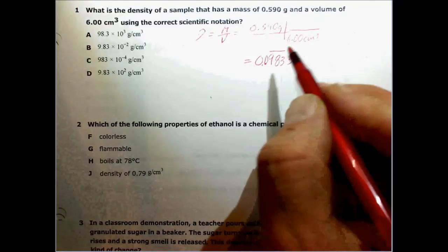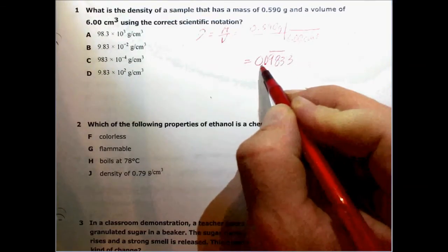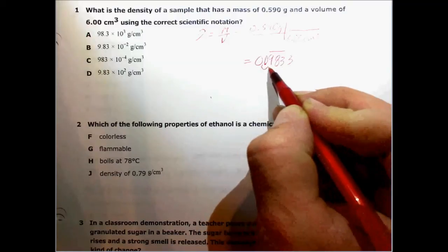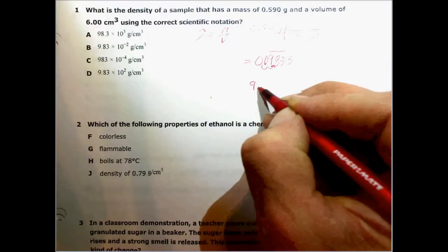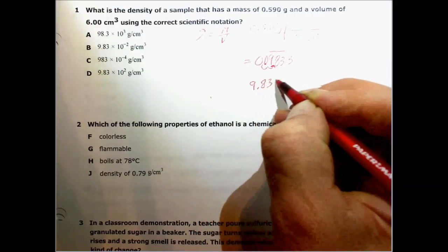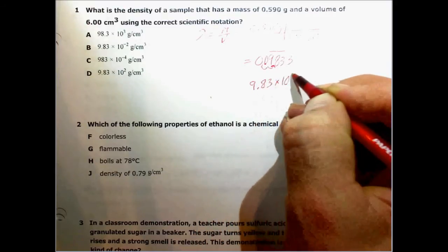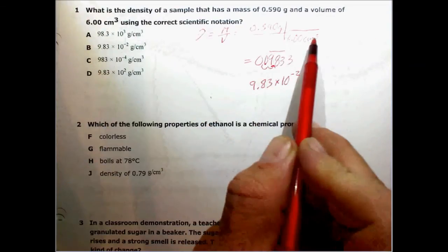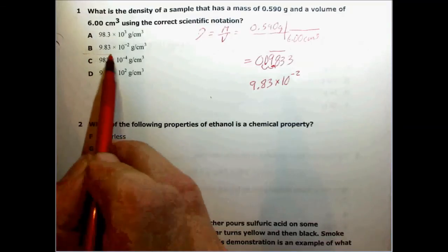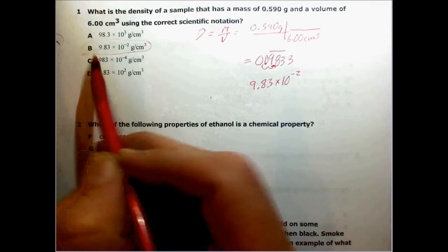We also need to convert it to scientific notation. We'll have to move the decimal point one, two places to the right. So our answer should be 9.83 times 10 to the minus 2 units for grams per cubic centimeter. And so this is our correct answer, B.